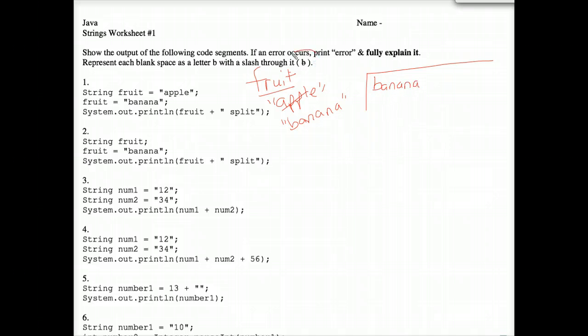And because we're supposed to represent spaces as a B with a slash through it on this particular worksheet, and because there is obviously a space there between the quote and the S, I should put a B with a slash through it there, and then the letters S-P-L-I-T. I'm not going to put quotes on the final answer here because this is supposed to represent the output window, which would not show those double quotes. So I know when I grade this that it's banana space split.